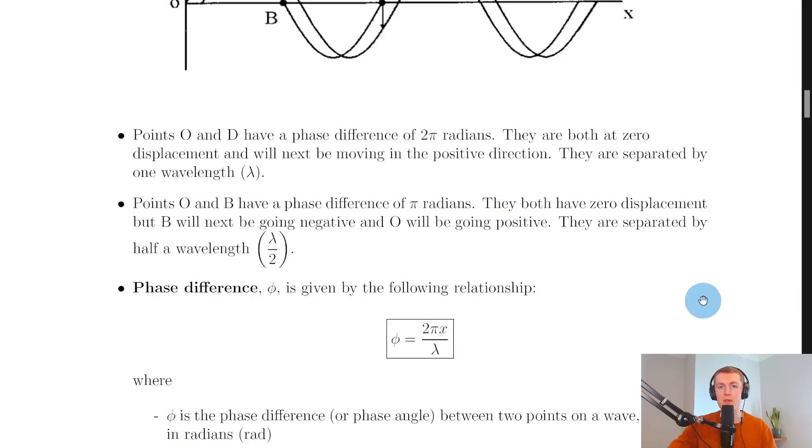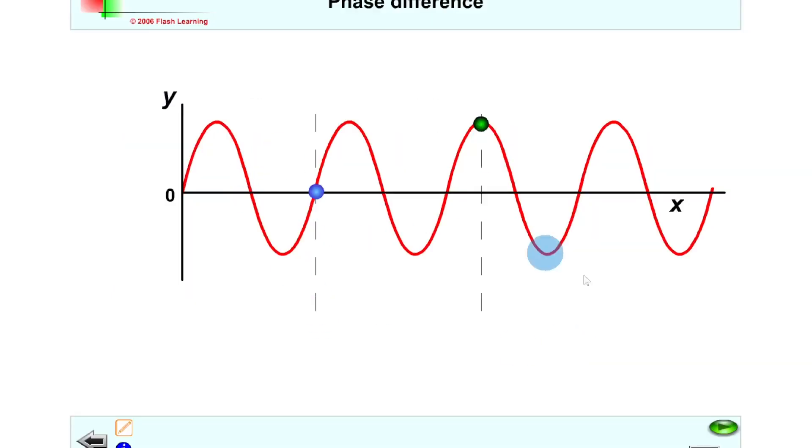I'll just show you a quick simulation to help you visualise this. Here we have a similar wave pattern to what was in the notes where we've got our y axis and our x axis and you can see we've got two particles of the wave shown.